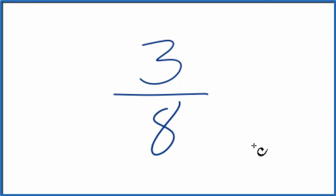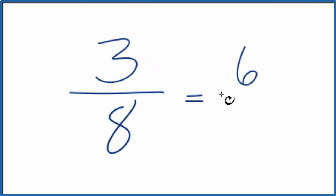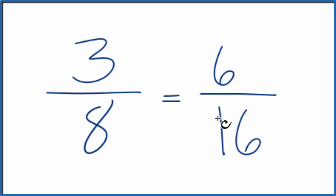If we wanted to look at an equivalent fraction, we could multiply the top, the numerator, and the denominator by 2. We could get 6/16, which would be equivalent to 3/8. And we could simplify this back to 3/8, but really 3/8, we can't reduce this any further.